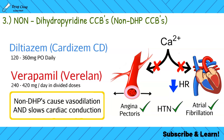Since peripheral edema is dose-dependent, we can reduce the dose to help. We can also incorporate an ACE inhibitor — conveniently, the combination product Lotrel already includes both agents. Another option is to recommend compression socks, which are very tight socks that start at the feet and gradually become less tight, pushing fluid back up to prevent accumulation in the lower limbs.